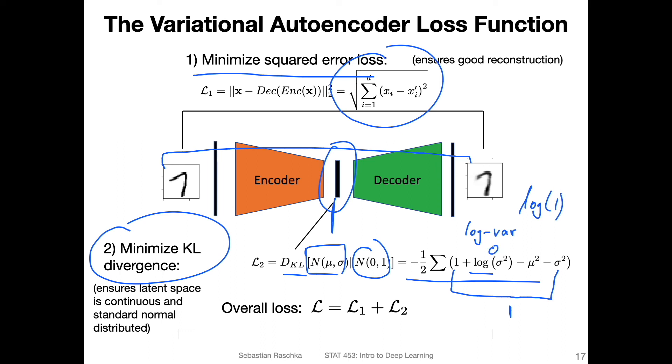So log of one should be also zero, then right? And if this is zero, so we have one plus zero minus zero minus minus one, gives us zero. This is when our KL divergence term is minimized.